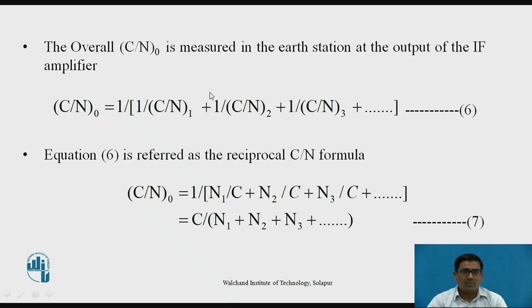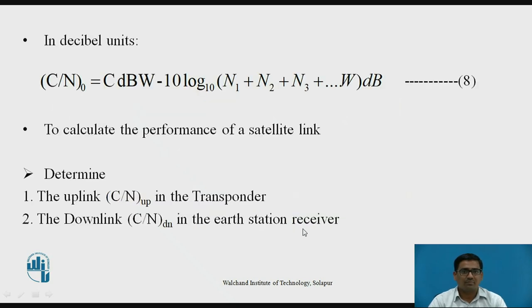In decibel units: (C/N)_b = C dBW - 10 log_10(N_1 + N_2 + N_3 + ... W) dB. To calculate the performance of a satellite link we have to determine first the uplink C/N_up in transponder and the downlink C/N_dn in the earth station receiver.